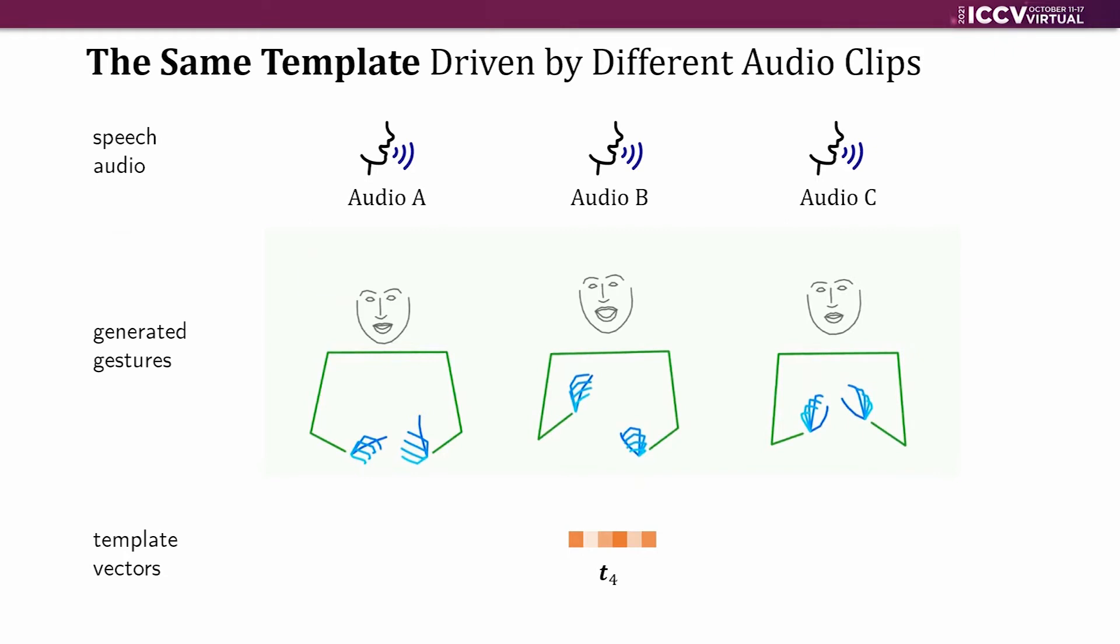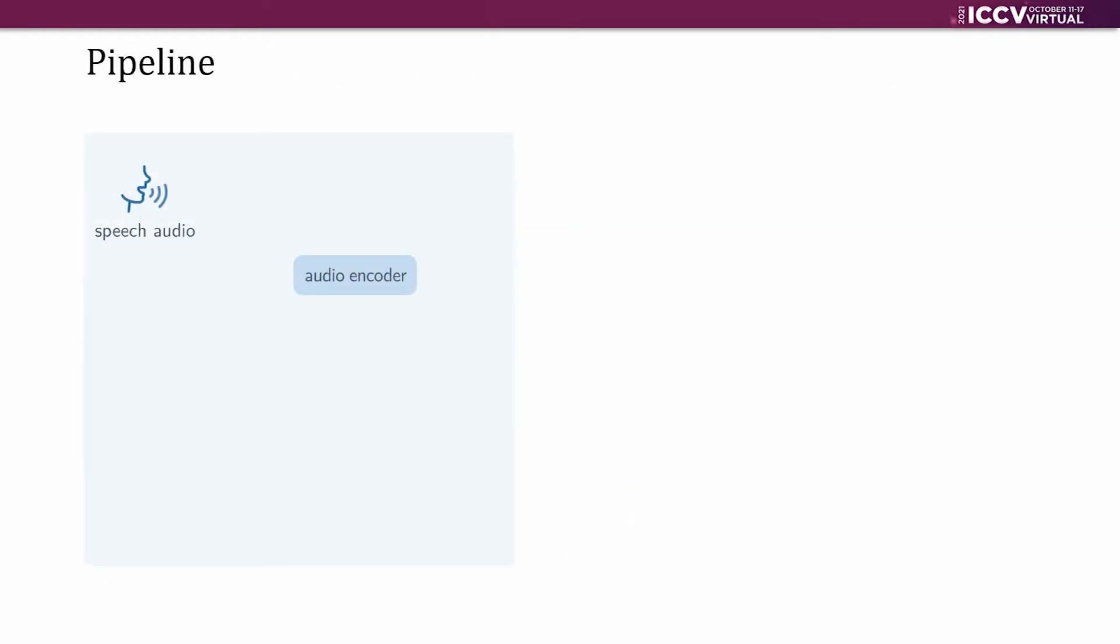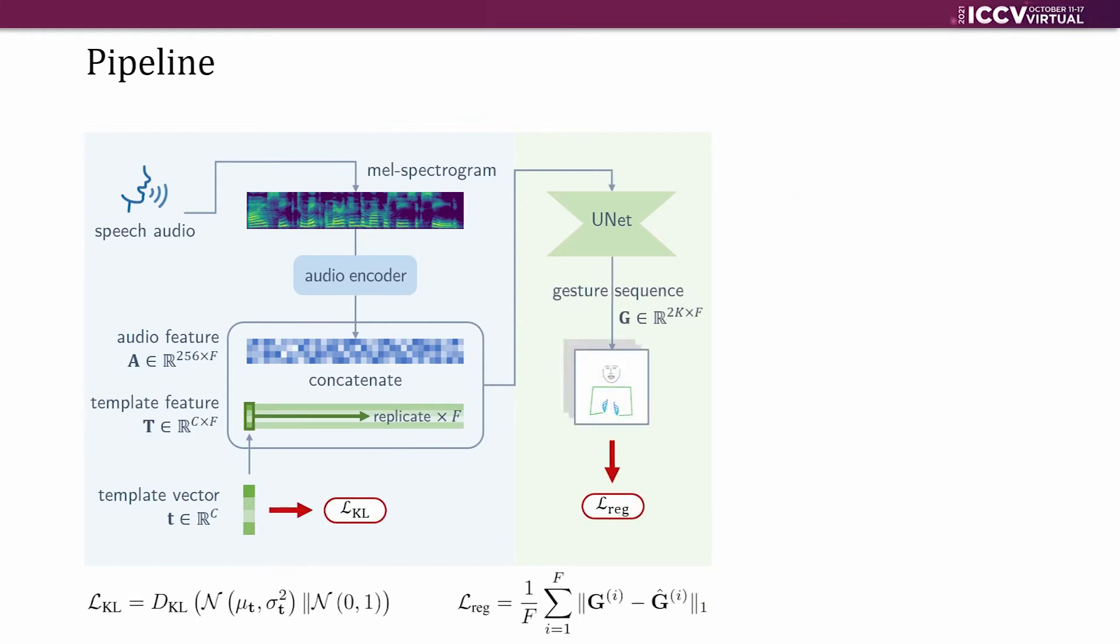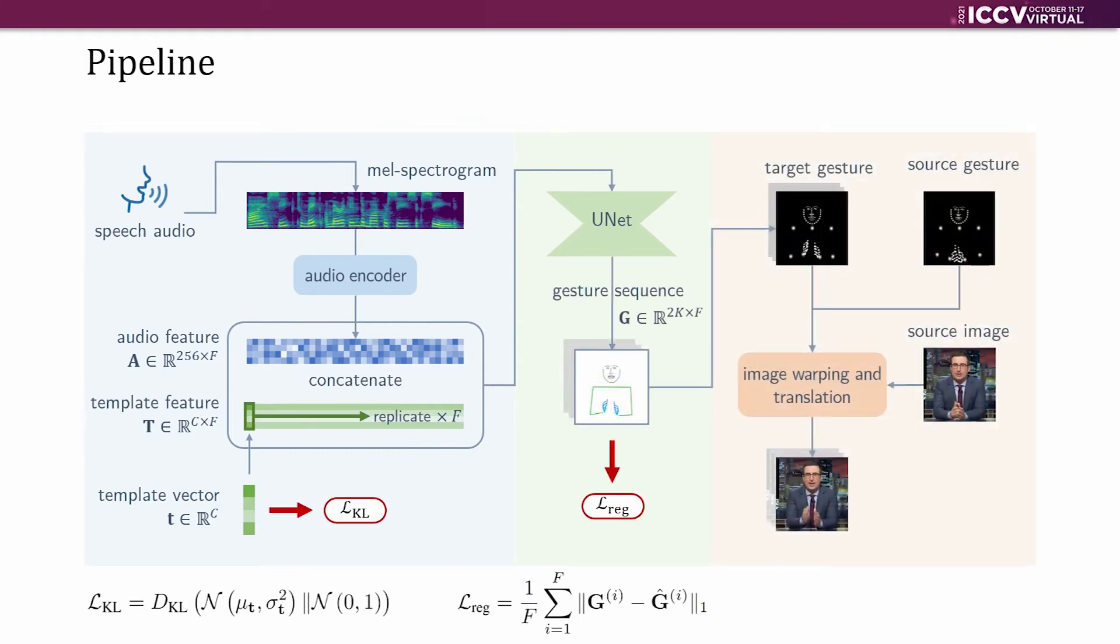The pipeline of our method is quite simple. Given an audio clip, we first transform it into a mel spectrogram, then feed it into a 2D CNN to obtain the audio feature. We also take a template vector and replicate it along the timeline to construct a template feature. Then, we concatenate the two and feed them into a unit to get the predicted gesture sequence, represented as upper body key points. We also use an image warping and translation module to synthesize images.